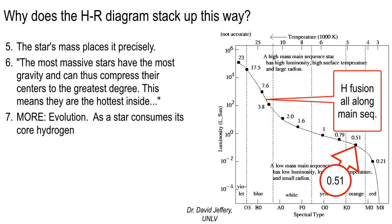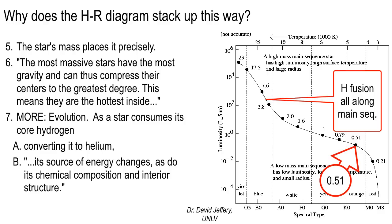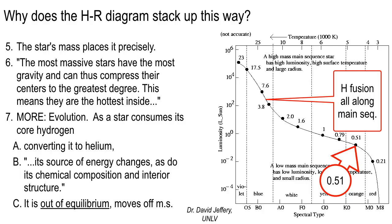As the star consumes its hydrogen and converts it to helium, eventually the source of energy changes, as do the chemical composition and interior structure. Once you stop fusing hydrogen and you're not quite hot enough to start fusing helium, the core is going to shrink down until it gets hot enough to burn helium. Then you start cooking up other elements like carbon, nitrogen, and oxygen. All the elements in the periodic table up to about iron — number 26 — can be cooked up in the center of a star, depending on how big it is. After it leaves the hydrogen fusion equilibrium, it goes off the main sequence.